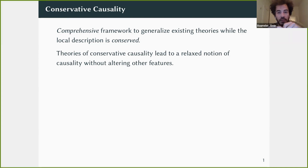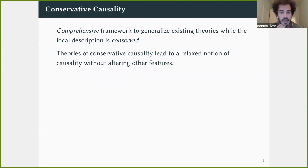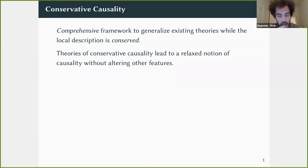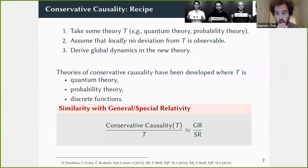Under the term conservative causality, I understand a comprehensive framework — a family of theories. The idea is to generalize an existing theory like quantum theory such that the local description, in the operational sense, is conserved: it remains quantum theory. These theories are rather tame; they keep the features of the original theory, but the notion of causality will be relaxed.